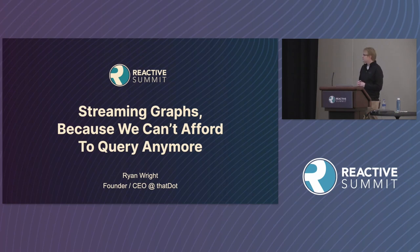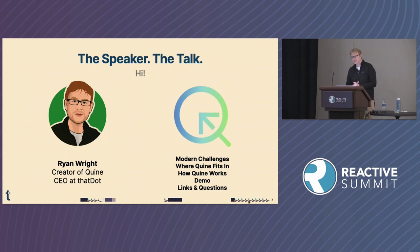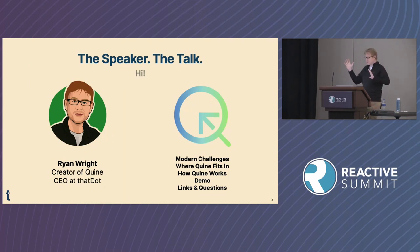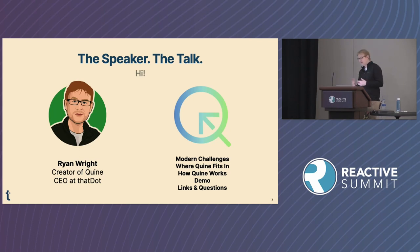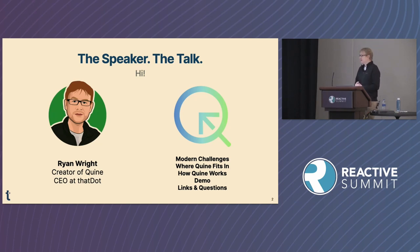Streaming graphs, because we can't afford to query anymore. The plan for the talk today is to introduce Quine, the world's first streaming graph — kind of like a graph database, but meant for reactive systems, stream processing, and that data pipeline kind of world.